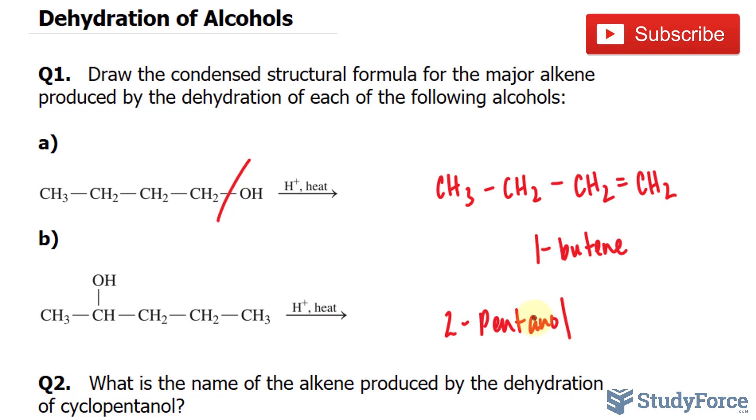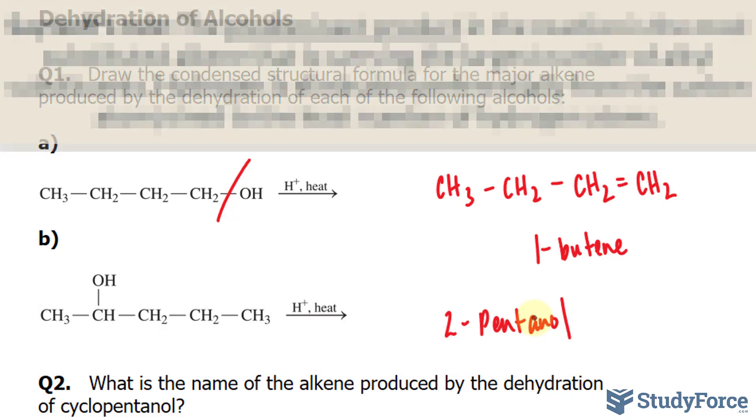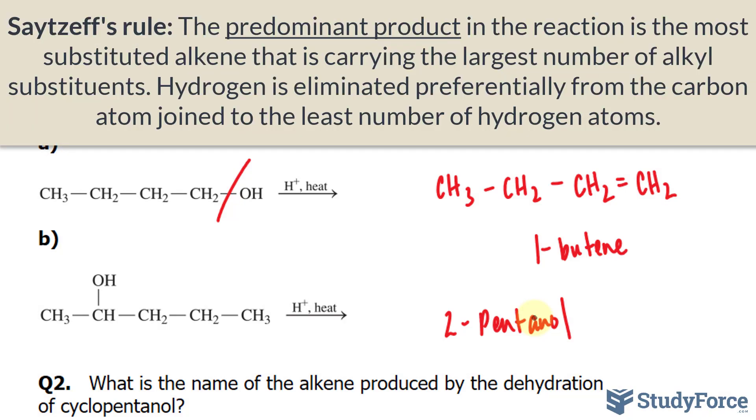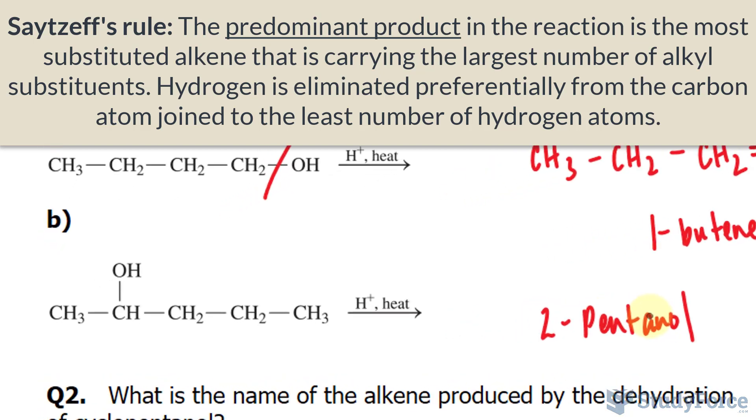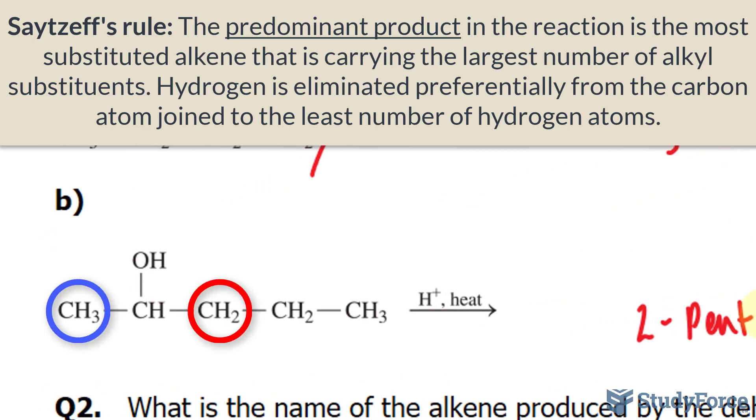Notice that this molecule is asymmetrical. We have the OH occurring at C2 as opposed to, for example, C3. Whenever you have asymmetrical alcohols, we use Zaitsev's rule to predict the outcome. Zaitsev's rule tells us that the predominant product in a dehydration reaction is the most substituted alkene, that is the one carrying the largest number of alkyl substituents. Or, in other words, hydrogen is eliminated preferentially from the carbon atom joined to the least number of hydrogen atoms.